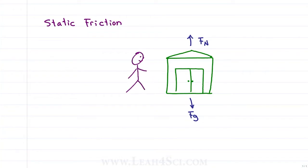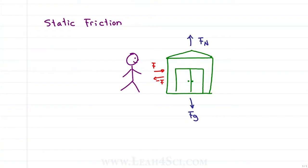Is the shed going to move? Not at all, but wait. You just applied a force in the positive x direction, which means there has to be a counter force in the negative x direction to keep the shed stationary. This is what static friction is all about. If you push on an object that isn't moving, that object is going to resist with static friction with the exact amount equal to the force you applied, so that it doesn't move.